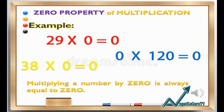Let us have some examples of the zero property. 29 times 0 equals 0. 0 times 120 equals 0. And 38 times 0 equals 0. Multiplying a number by zero is always equal to zero. It is called the zero property of multiplication.